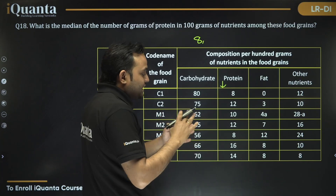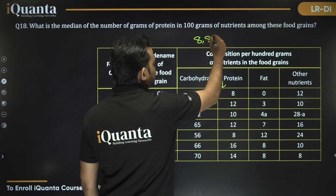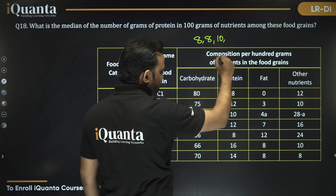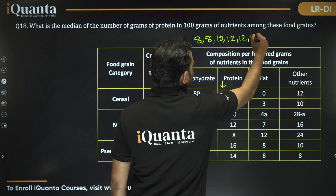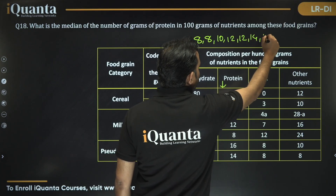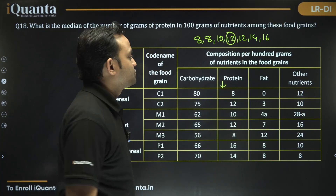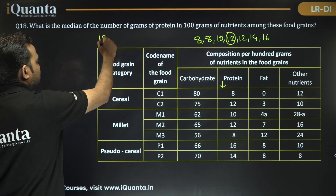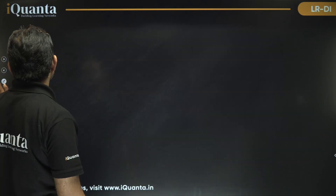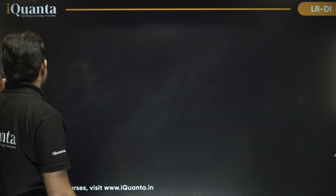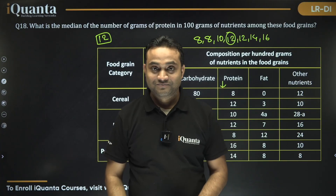Question 4: What is the median grams of protein per 100 grams among all 7 food grains? Arranging in ascending order: 8, 8, 10, 12, 12, 14, 16. The middle (4th) value is 12. Median = 12. That completes this set.